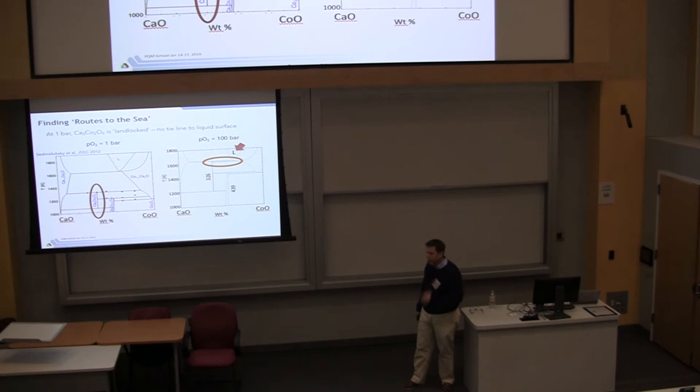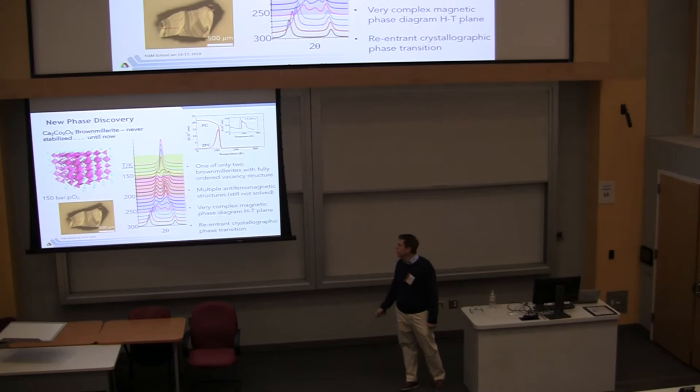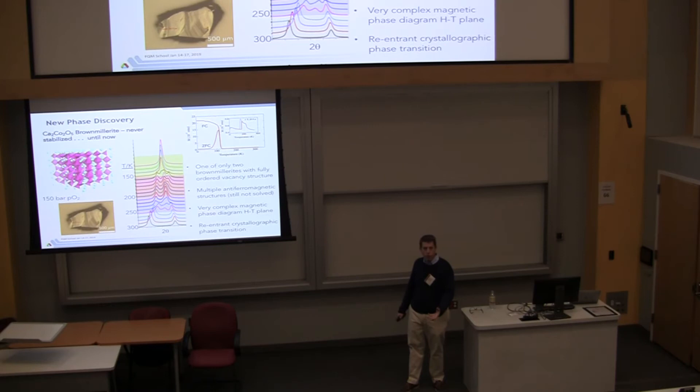But long before you reach a liquid. I call this a landlocked compound. And what we like to do is somehow find a route to the sea. Right? We gotta find a way to get a liquid in contact with this solid if we're gonna grow a crystal. And so this fellow here that did this calculation. I wrote him and said, can you do this calculation at pressure? And he said, well, if I go to 100 bar of oxygen, then all of a sudden I've increased this decomposition point to where now we actually have a peritectic.